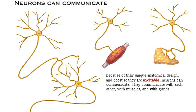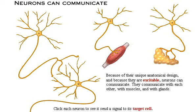Because of their unique anatomical design and because they are excitable, neurons can communicate. They communicate with each other, with muscles, and with glands. Click each neuron to see it send a signal to its target cell.